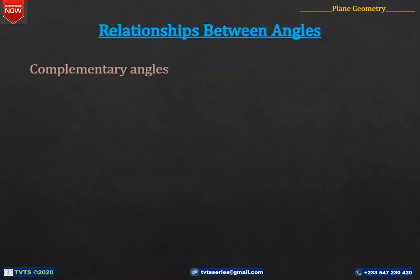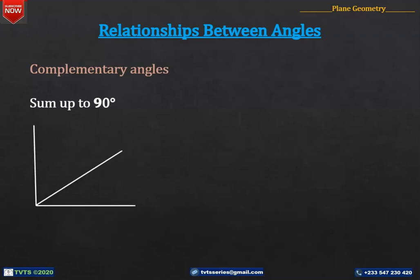Next is complementary angles. Two angles are complementary if they sum up to 90 degrees. For instance, in this diagram, angles A and B are said to be complementary because they form a right angle. That is, A plus B is equal to 90 degrees. It is worth noting that complementary angles don't necessarily have to be close to each other. As far as they sum up to 90 degrees, they are complementary.